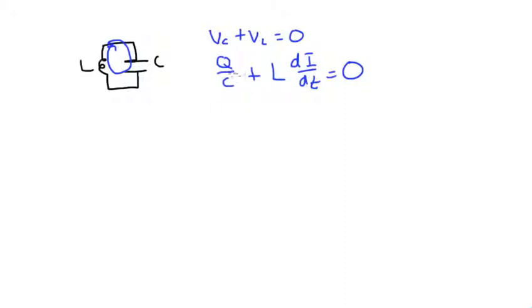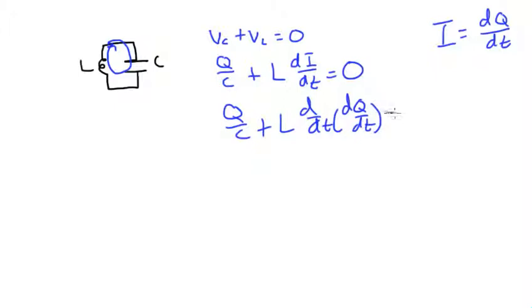So now what we need to do is we need to write all this down in terms of one variable, so we have charge Q and current I, and we can remember that the current is going to be equal to the time derivative of the charge on the capacitor. So we can put that into here, so we'll have Q over C plus L d dt of dq dt, and that equals to zero.